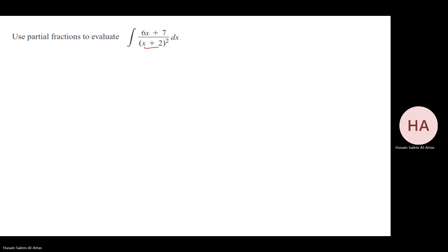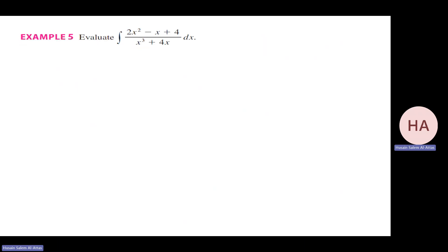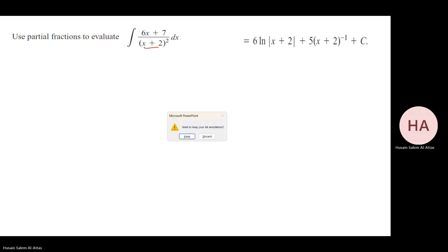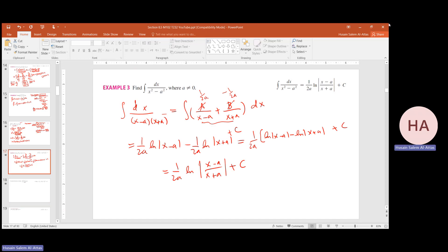We will stop here. In the next part, I will cover the case of repeated linear factors, combinations of methods, and then move to irreducible quadratic factors to see what happens. I want to keep the video manageable, so this first video covers the distinct linear factor case. Thank you.